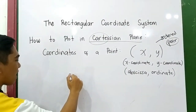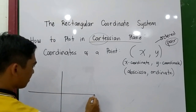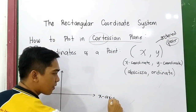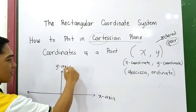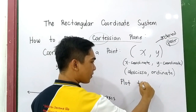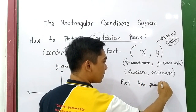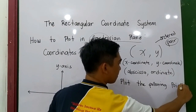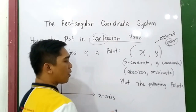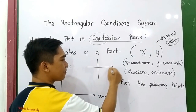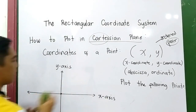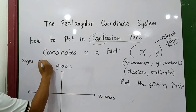Now let us try to plot using the Cartesian plane. This is the x-axis and y-axis, and of course this is the origin. Plot the following points. But before we proceed on that, let us first recall the signs of our quadrants.